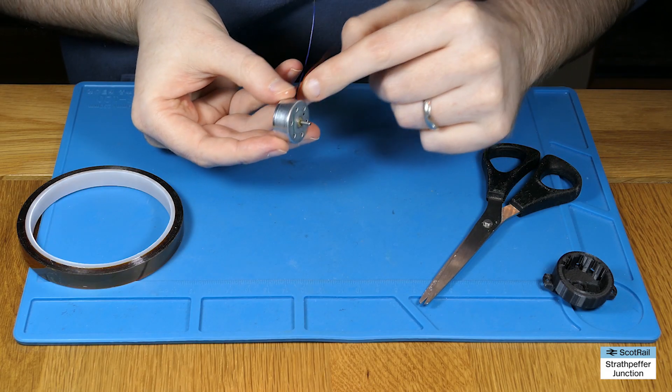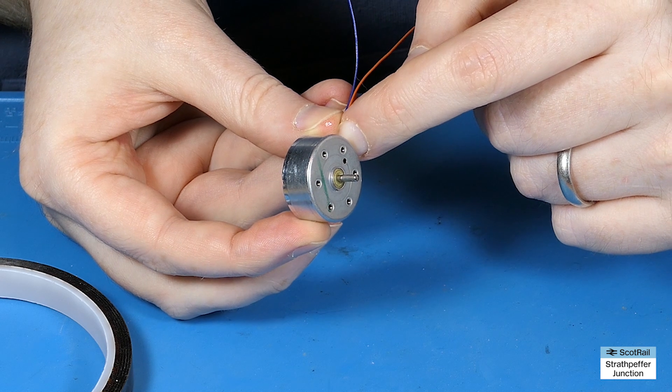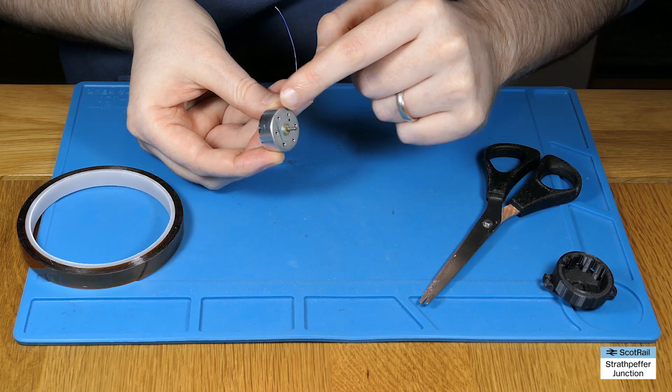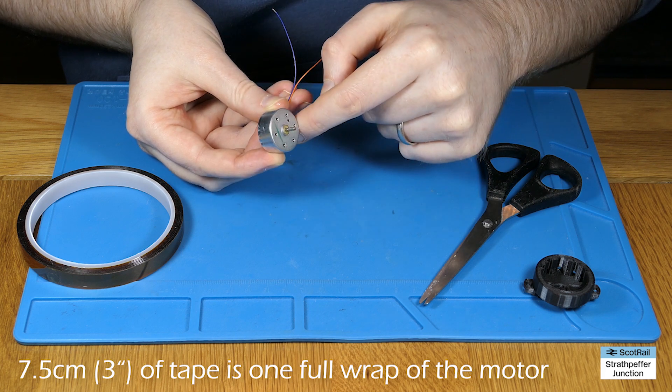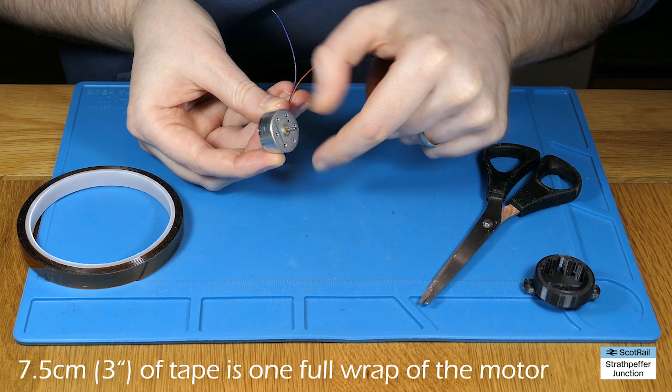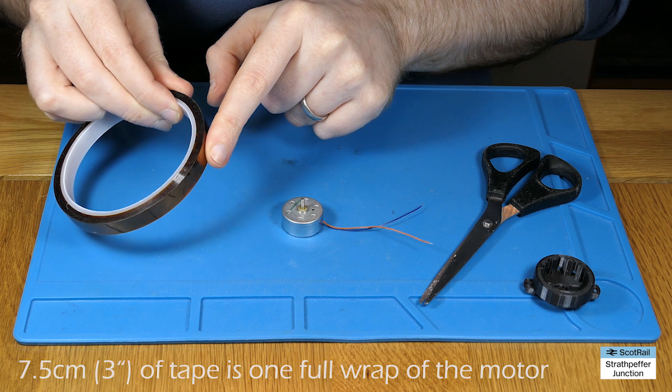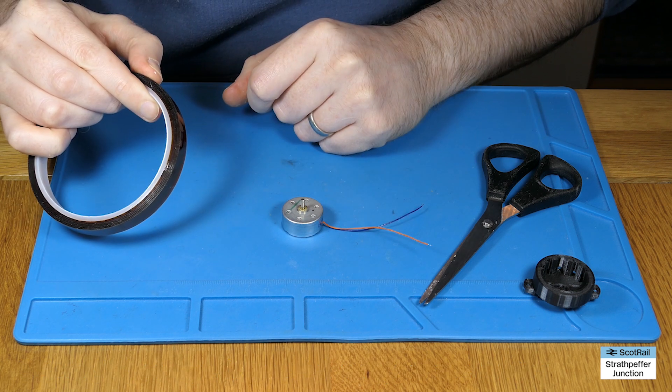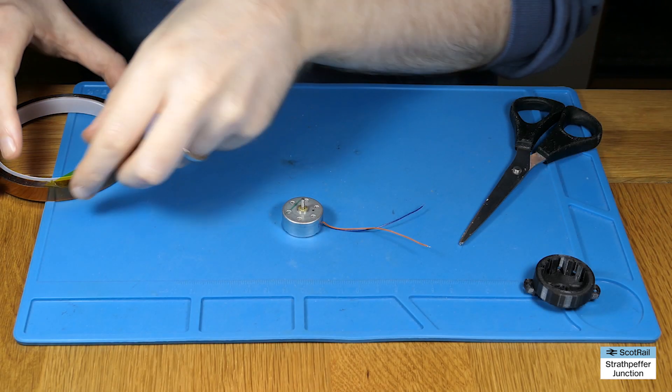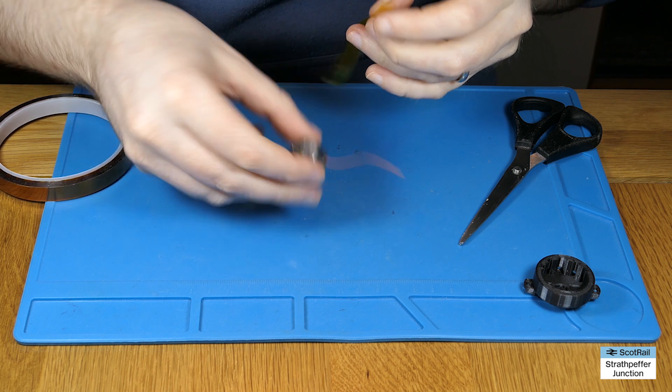And what we want to do is wrap a layer of Kapton tape around the outside of the motor. I suspect we'll probably just need a single layer for this adapter, but you could build them up if you needed to, so you know, one layer and two layer and so on. So we'll cut a little strip to get going first of all, anyway, and then we'll wrap that strip around the motor. Okay, so in true Blue Peter fashion, here's a wee strip that I've cut earlier.